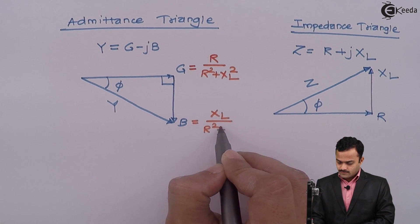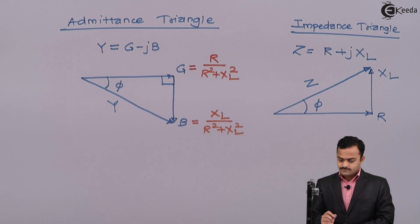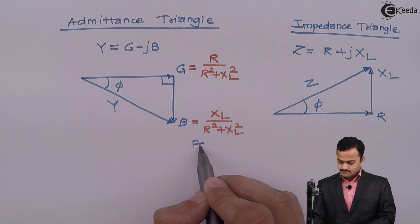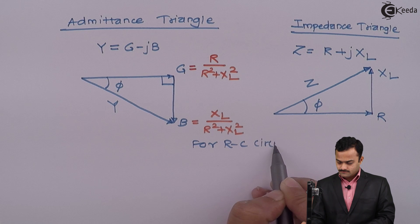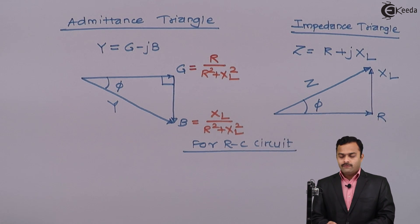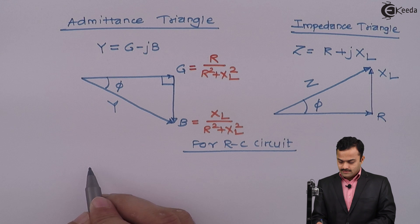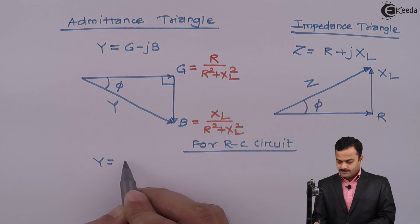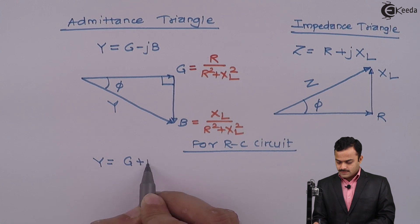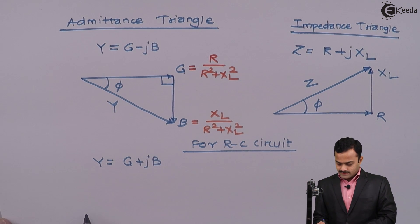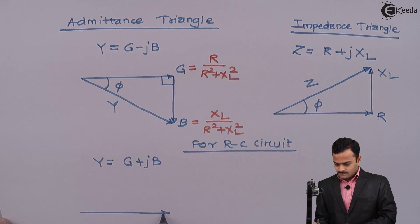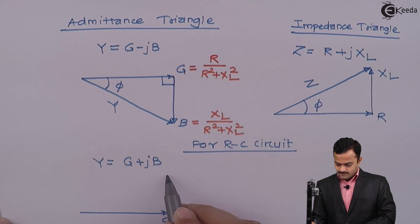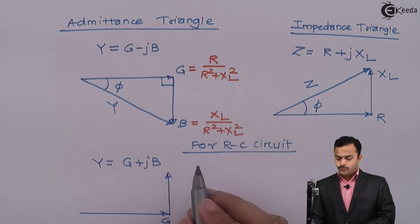Using the same analogy, I can use this for an RC circuit. For an RC circuit, I will have an admittance triangle. For that, admittance Y will be G + jB, and it will be like this: G, and +jB will come vertically upward.